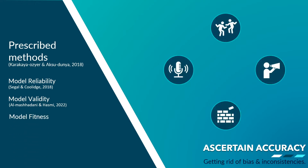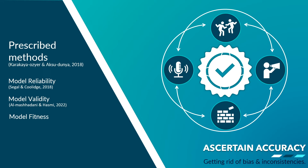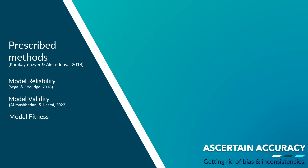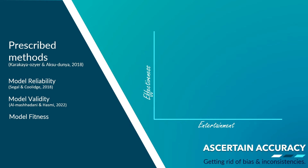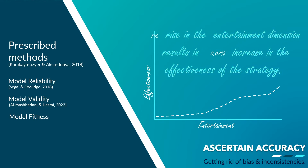Third method is model fitness. Once my model is developed, I must test the fitness of the model to make sure that the proposed relationships are accurate based on the linkages, and will not require any further interventions or modifications. For instance, I have concluded that a 1% rise in the entertainment dimension can result in a 0.02% increase in the effectiveness of the social media promotion strategy. Now, if I change the respondents from randomly selected 300 customers to 300 loyal customers, I must ascertain that the proposed model will still have similar results — that is, a rise in the entertainment dimension will still result in increasing social media marketing effectiveness. If this model changes with a change in data, it depicts that the relationship we have identified is not accurate.